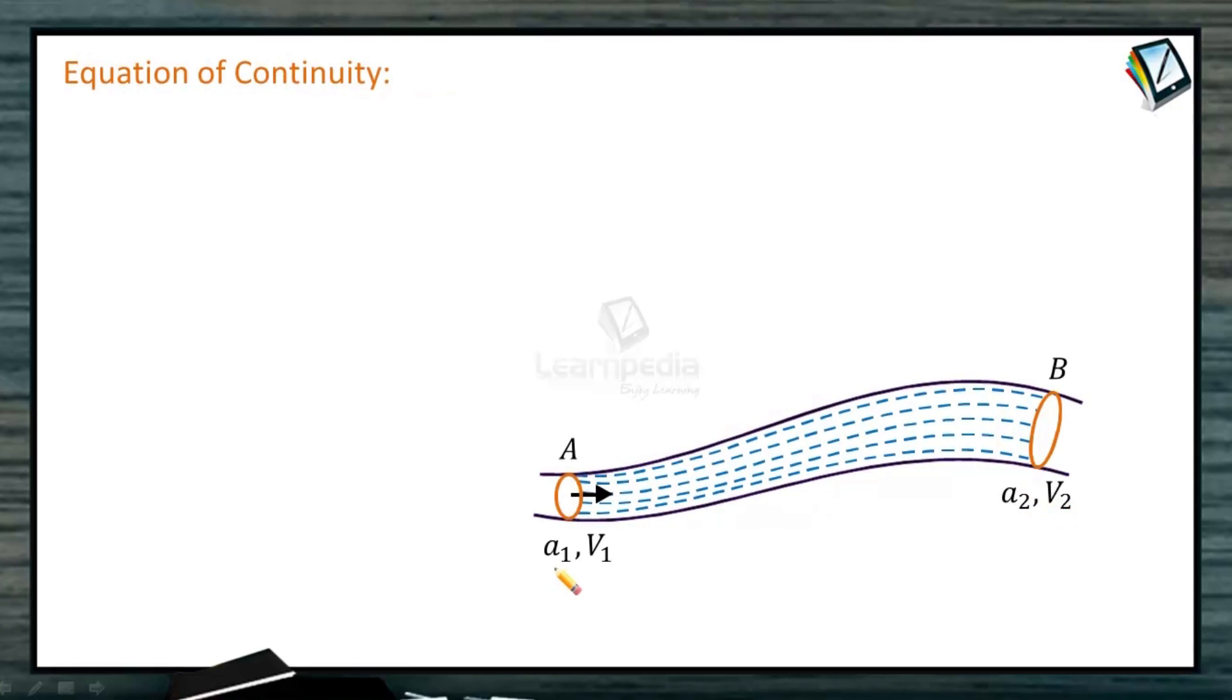Then, this product of area of cross-section and velocity must always be constant. This is called the equation of continuity and states that as the area of cross-section of the tube of flow becomes larger, the fluid speed becomes smaller and vice versa.